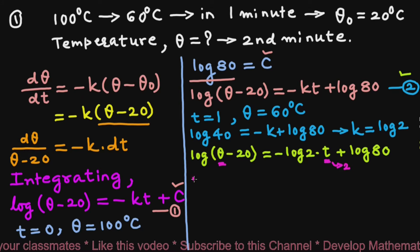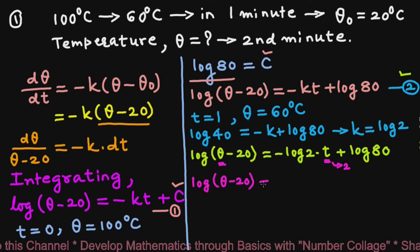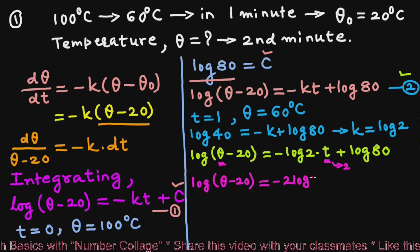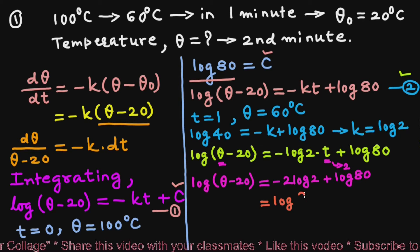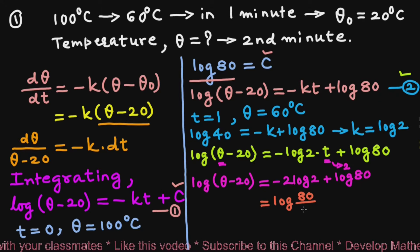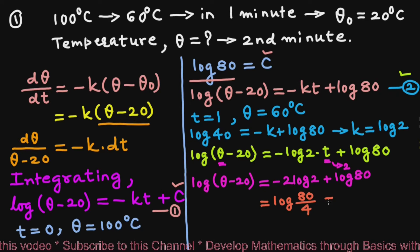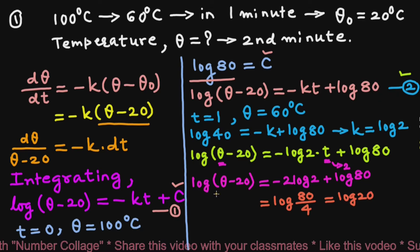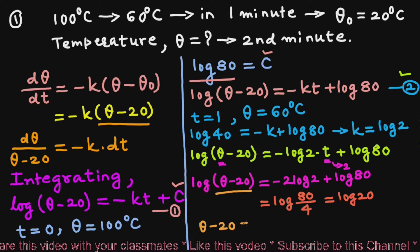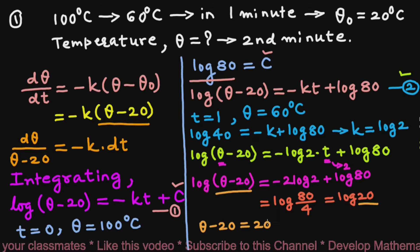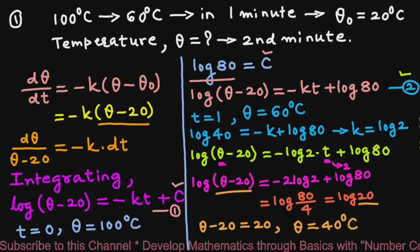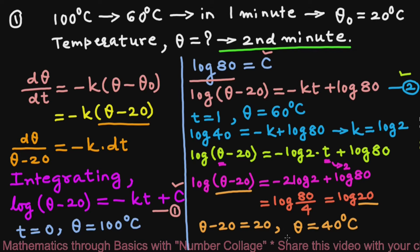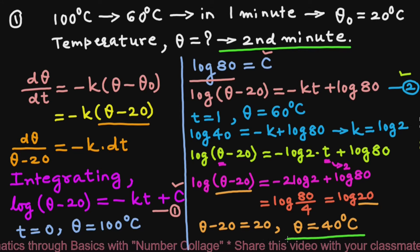We write log(θ − 20) = −2 log 2 + log 80 = log(80/4) = log 20. This gives θ − 20 = 20, so θ = 40°C. At the end of the second minute, the temperature of the body will be 40°C.